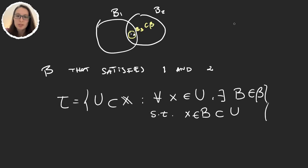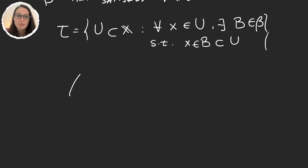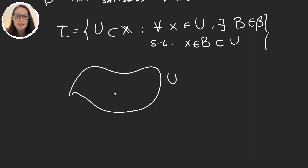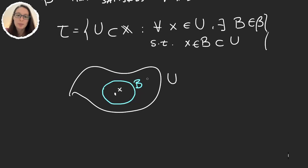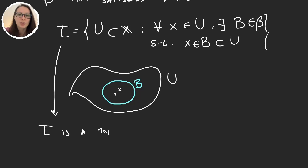Essentially what I'm saying is: I have some set U and an element x; if I can find some element B that is in our basis, then this set U is going to be a part of my topology. But let's actually prove it. From the last video we know we have to prove three things to say that some collection is a topology.